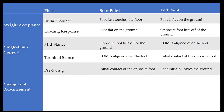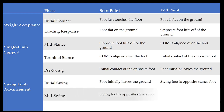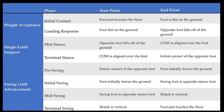Our first phase of swing limb advancement is pre-swing, which starts with initial contact of the opposite foot and ends when that reference foot initially leaves the ground. Next, we have initial swing, which starts when the foot initially leaves the ground and ends when that swing foot is opposite the stance foot. Our third phase is mid-swing, which starts when the swing foot is opposite the stance foot and ends when the shank — the tibia and fibula — are vertical. Our final phase is terminal swing, which starts when the shank is vertical and ends when that foot touches the floor.